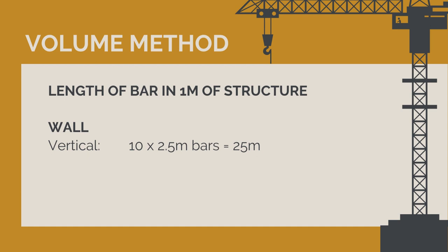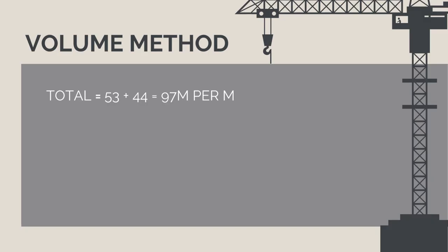For the wall, we will have 5, 2.5 meter bars running vertically on each side which gives us 25 meters. And then running the length of the structure, we will have 14 bars along each side giving us 28 meters. Therefore, for the wall we have 53 meters of rebar per meter.